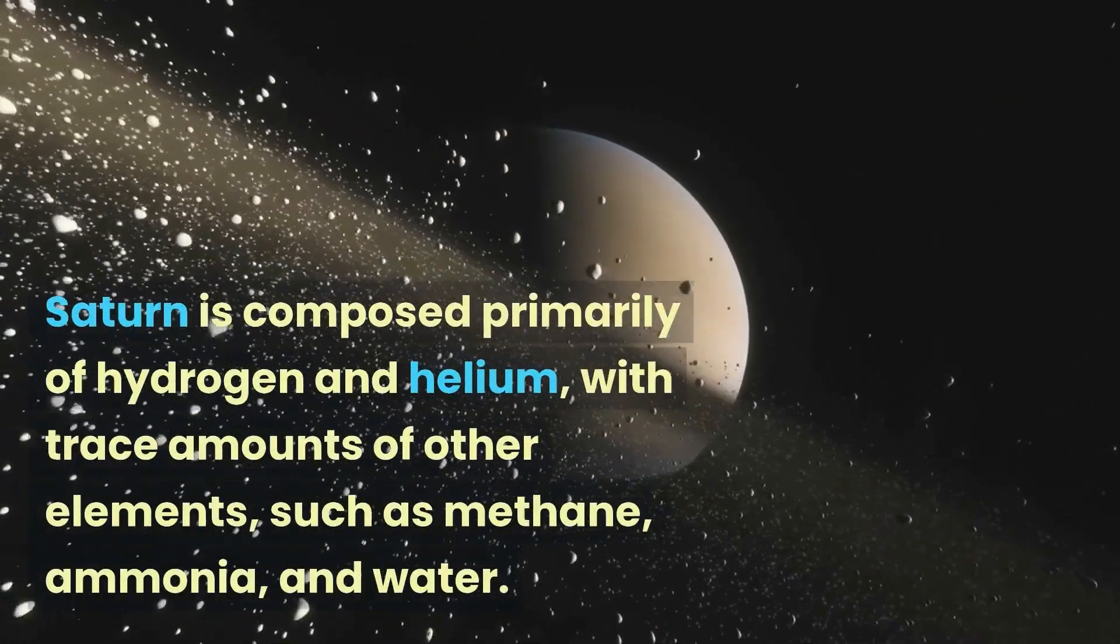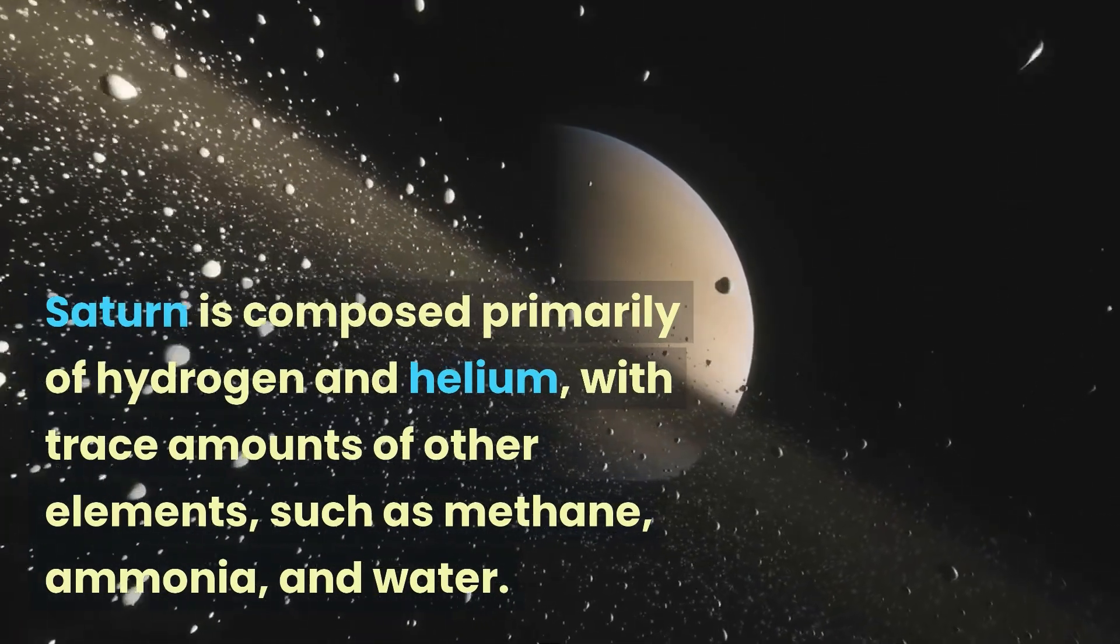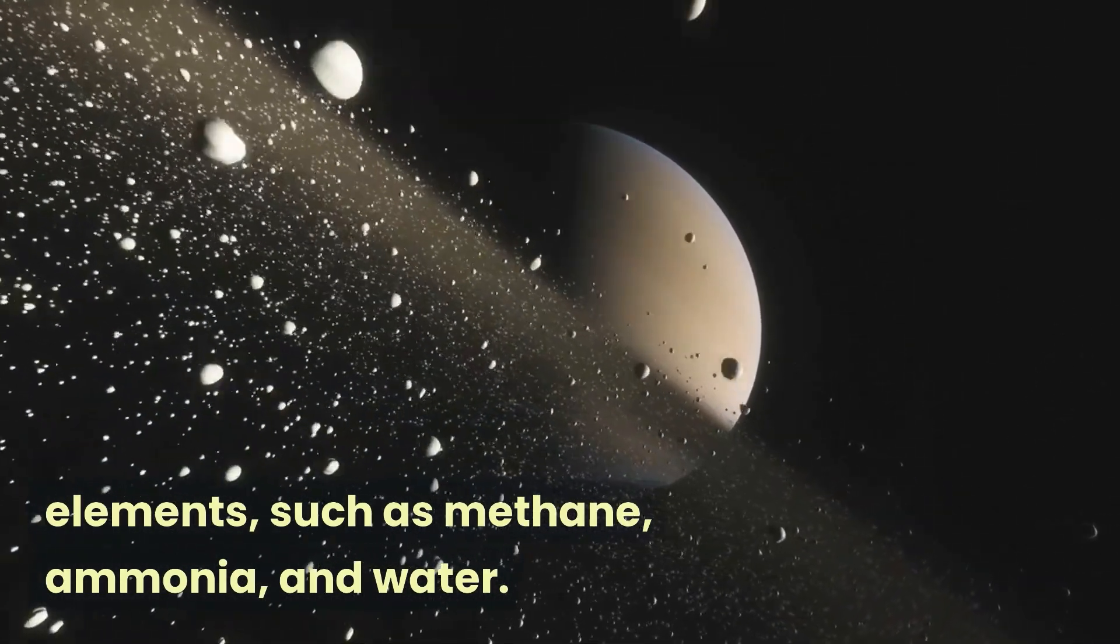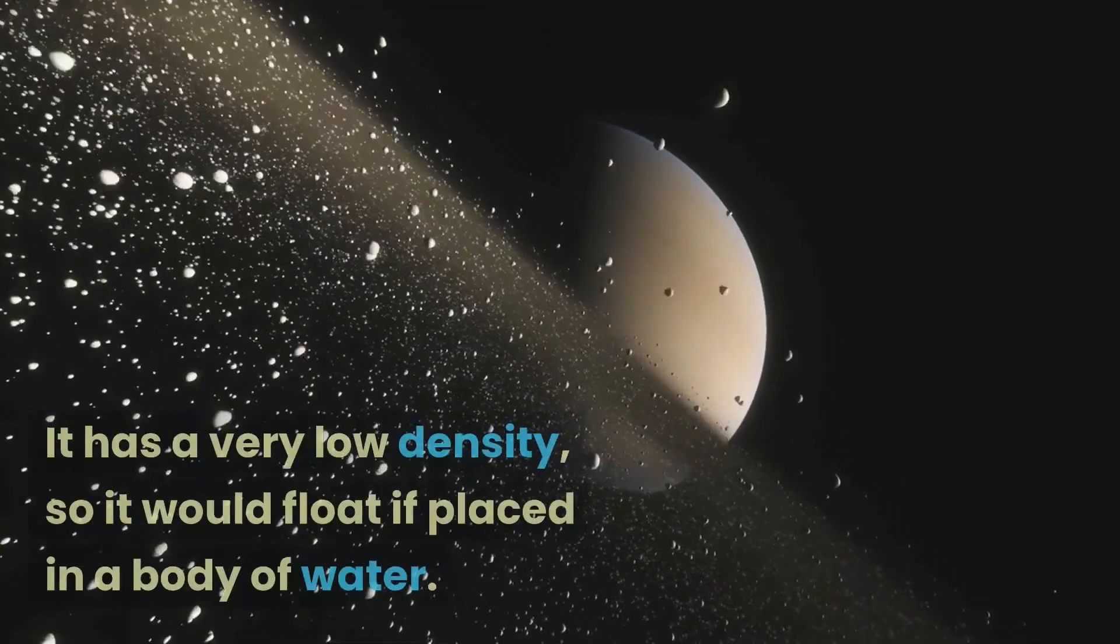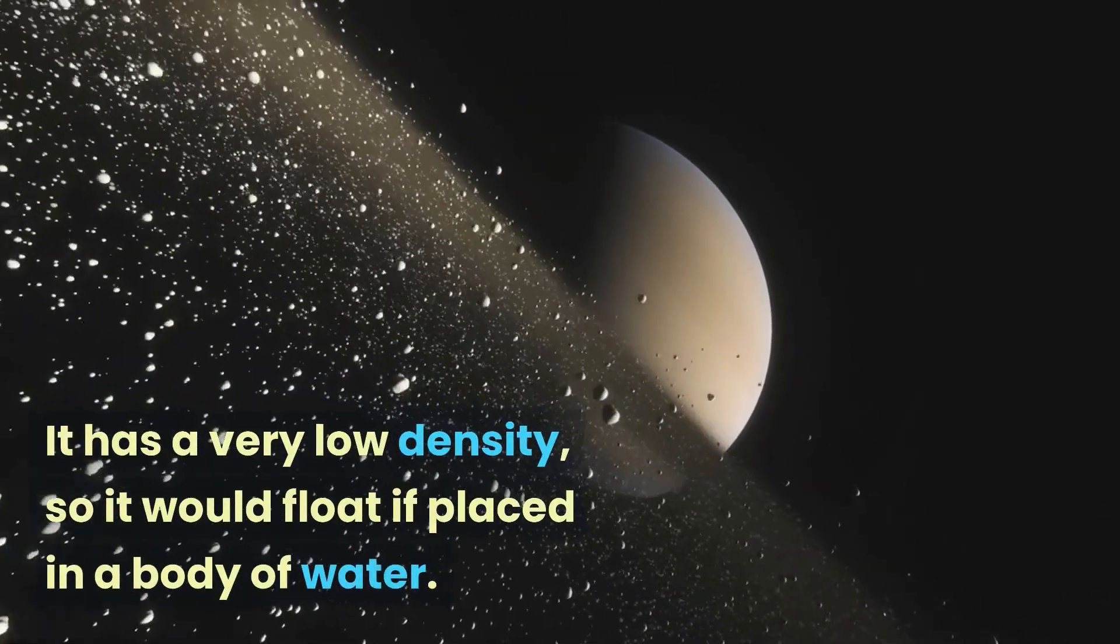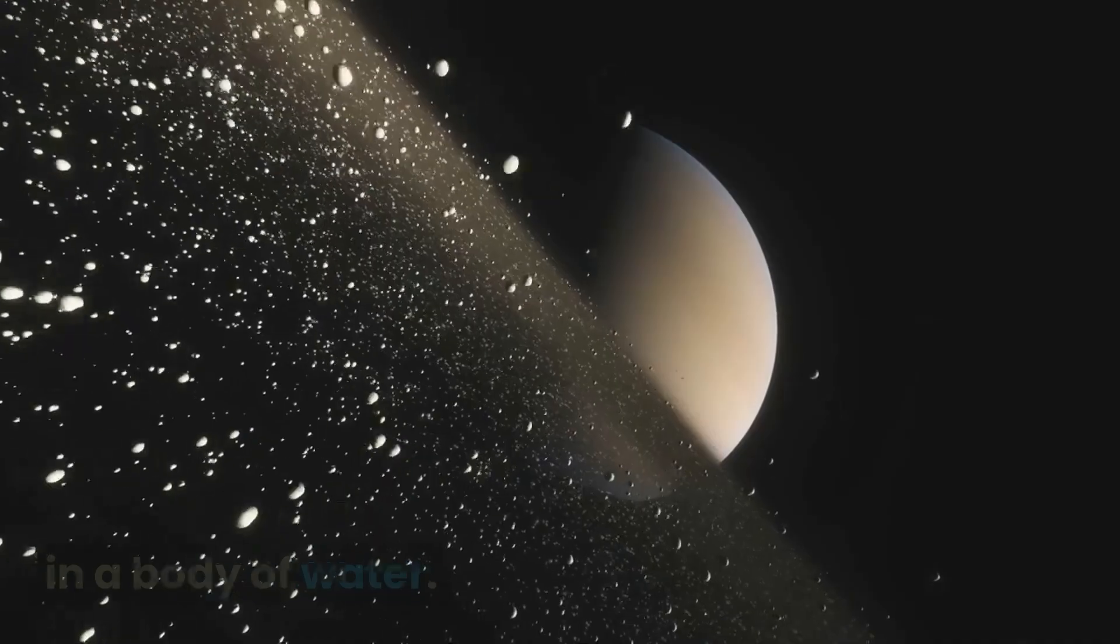Saturn is composed primarily of hydrogen and helium, with trace amounts of other elements, such as methane, ammonia, and water. It has a very low density, so it would float if placed in a body of water.